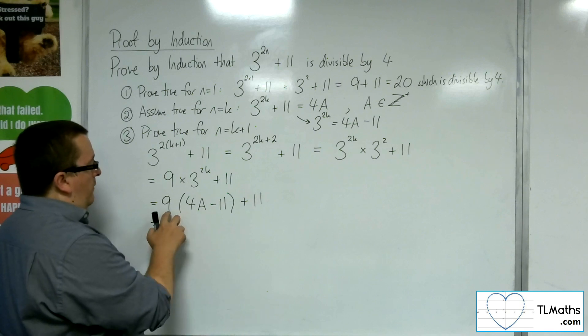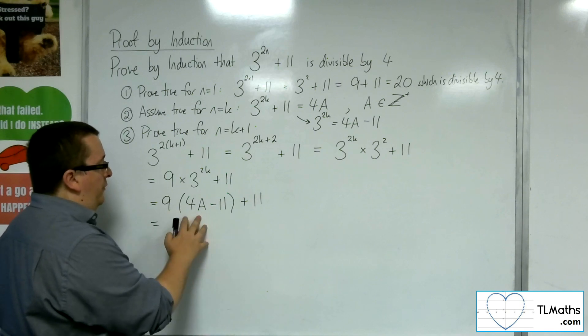So we've got 9 lots of 4a minus 11 plus 11. Now I've got this 9 lots of 4a, so I'm going to expand the bracket out,